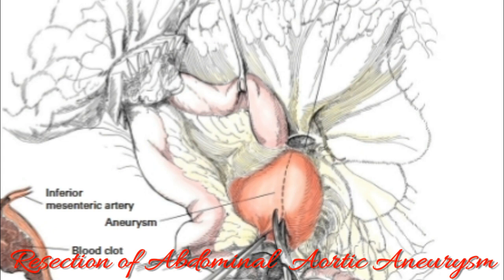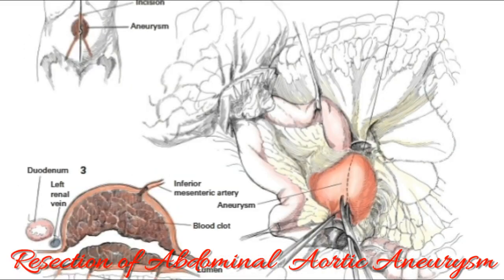Emergency operations may offer the only chance of a patient's survival if there is evidence of leakage or rupture of the aneurysm. A past history of coronary artery disease is not a contraindication to surgery. CT scan best defines the size and contour of these aneurysms; transabdominal ultrasound is a good screening tool, but CT best defines size and proximal and distal extent.